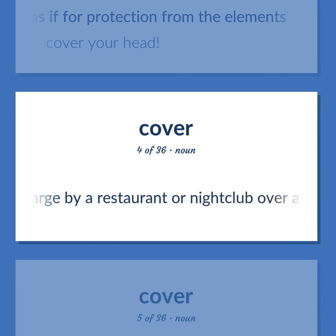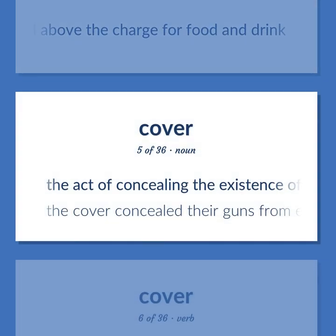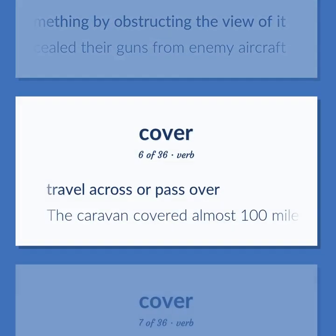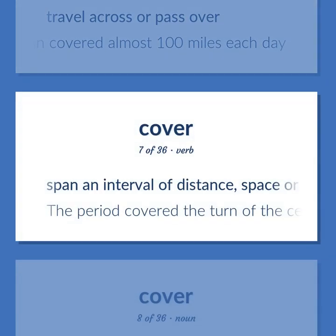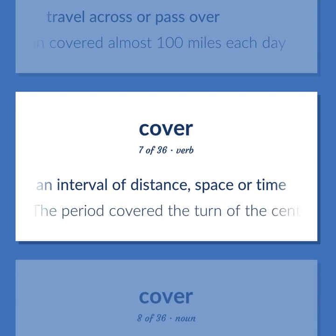A fixed charge by a restaurant or nightclub over and above the charge for food and drink. The act of concealing the existence of something by obstructing the view of it — the cover concealed their guns from enemy aircraft. Travel across or pass over — the caravan covered almost 100 miles each day. Span an interval of distance, space, or time — the period covered the turn of the century.